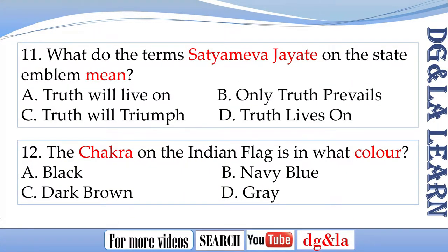Question 11: What do the terms 'Satyameva Jayate' on the state emblem mean? The options are A. Truth will live on, B. Only truth prevails, C. Truth will triumph, D. Truth lives on.